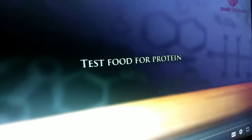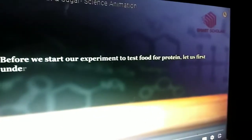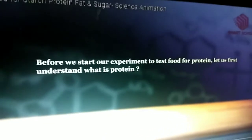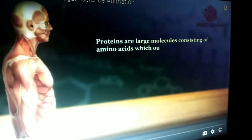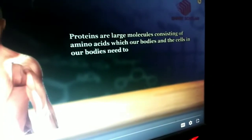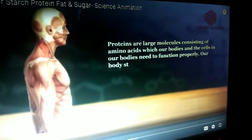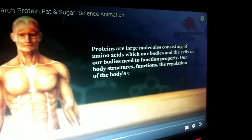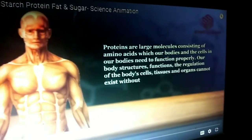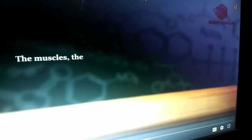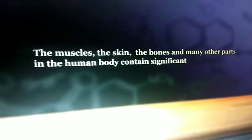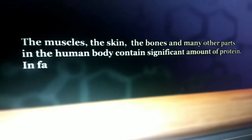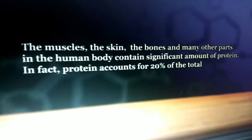Test food for protein. Before we start our experiment to test food for protein, let us first understand what is protein. Proteins are large molecules consisting of amino acids, which our body and the cells in our body require to function properly. Our body structure, functions, regulations of the body cells, tissues and organs cannot exist without proteins. The muscles, the skin, the bones and many other parts of the human body contain a significant amount of protein. In fact, protein accounts for 20% of the total body weight.